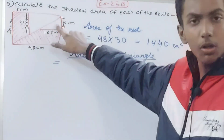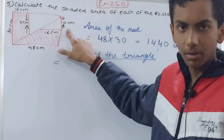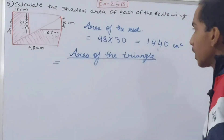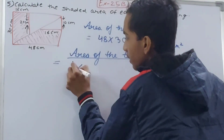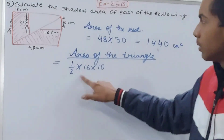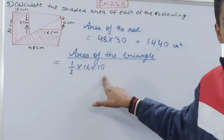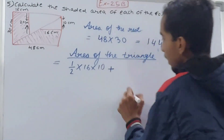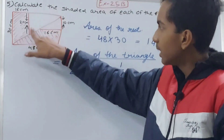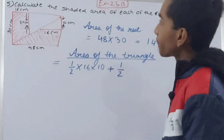Let's begin with the smaller triangle. You can clearly see the base is 16 centimeters and the height is 10 centimeters. So the area is half into base into height: ½ × 16 × 10. Then plus the area of the second triangle, again using the formula ½ × base × height.